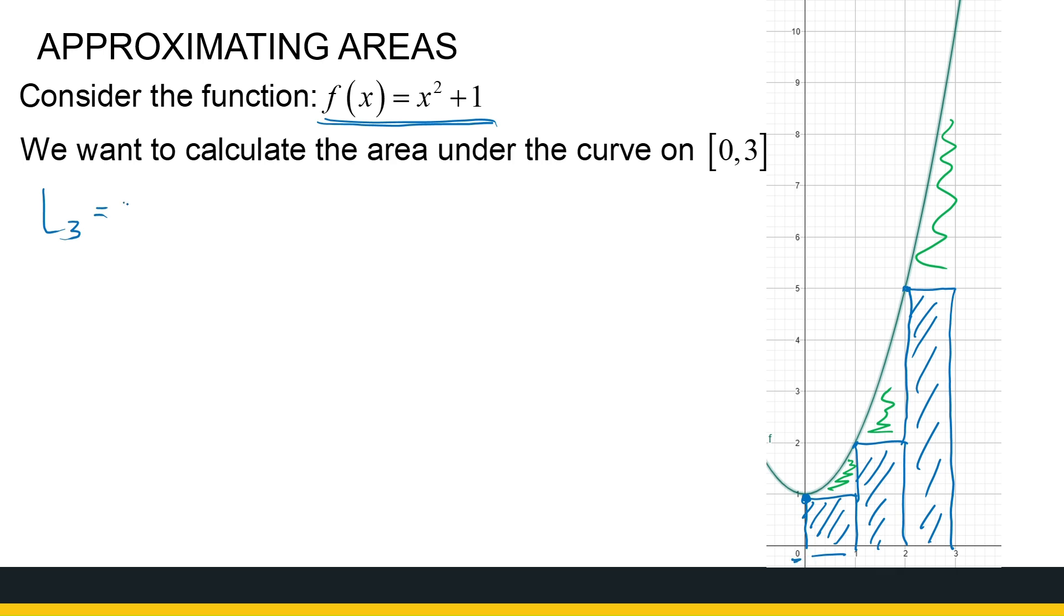So it's the width of 1 times the function value at 0, plus, for the next one, the width of 1 times the function value at the left-hand point, which is 1, plus the width of 1 times the function value at the point 2. So that's the three rectangles that I'm adding up. You can substitute that in, find that area, and you will get a value of 8. So that's my left-hand sum, if I divide it into three rectangles. But we see that it's not quite accurate.